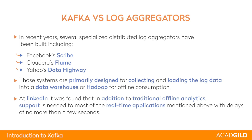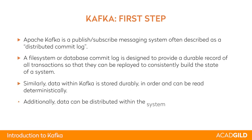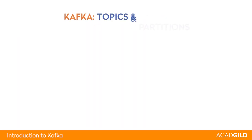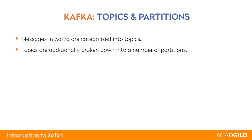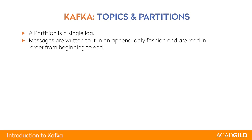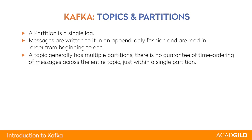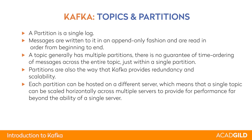Kafka is a distributed publish-subscribe messaging system. Every message is retained in a topic, and a topic is divided into partitions. The partitions are on different machines and each partition is a single log. Any message written to a partition is assigned an offset, which is unique for that partition and specifies the position of the message. A message can have a key and a value; the key can be null. If you have a key, the producer can choose which partition a message should be sent to; otherwise, Kafka will decide internally. You may replicate partitions for redundancy to increase availability, so that if one partition fails, you can recover it from a different machine.